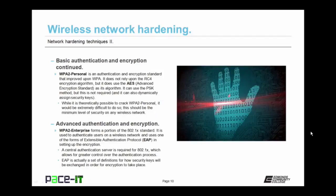Better than WPA is WPA2 Personal, Wi-Fi Protected Access 2 Personal. It's an authentication and encryption standard that improved upon WPA. It does not rely upon the weak RC4 encryption algorithm, but uses AES — Advanced Encryption Standard. It can also use the PSK method, but this is not required as WPA2 Personal can also dynamically assign security keys. While it's theoretically possible to crack WPA2 Personal, it would be extremely difficult, so this should be the minimum level of security on any wireless network.